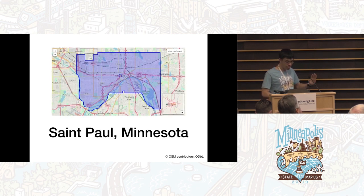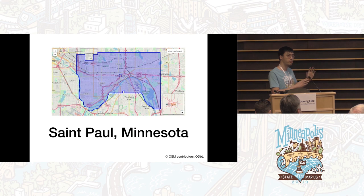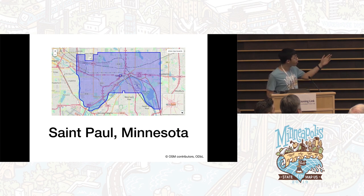Up to now, the queries I've shown have all defaulted to searching within the current map viewport, which you can change at any time by searching or dragging the map around. But what if you want to search in a non-rectangular area? For example, what if you want to search in St. Paul, but not in West St. Paul or South St. Paul?